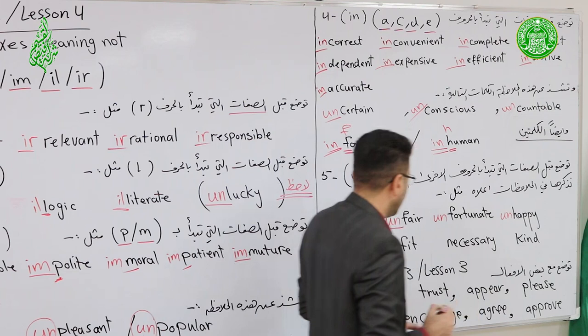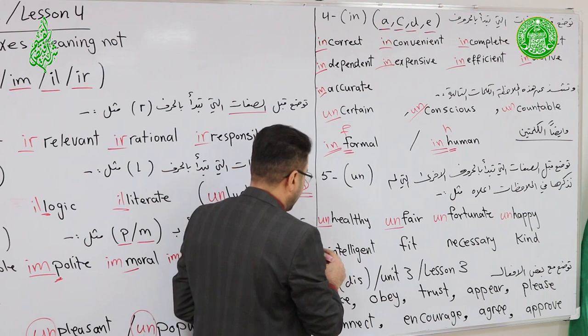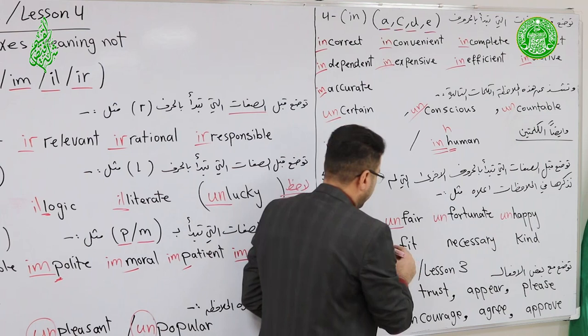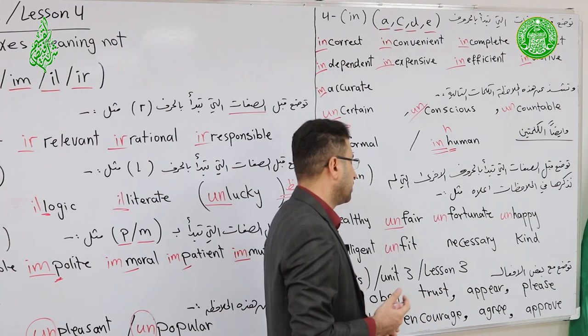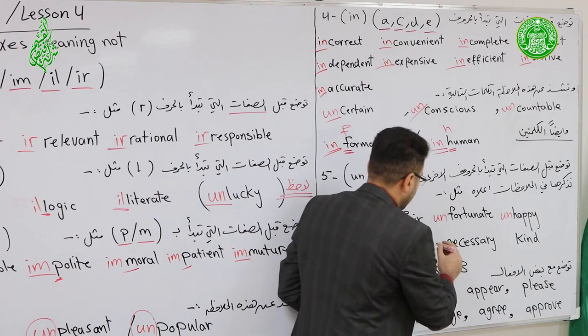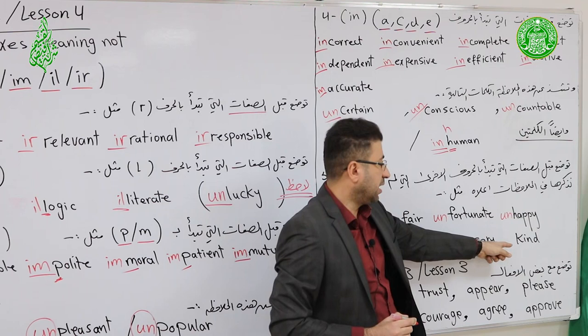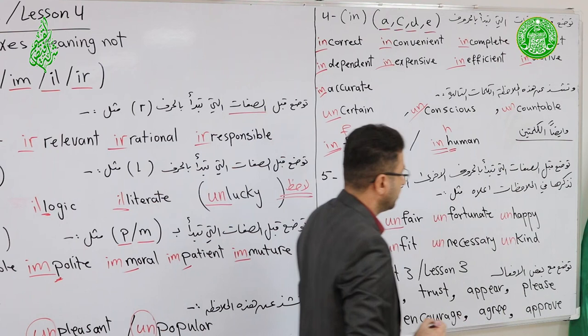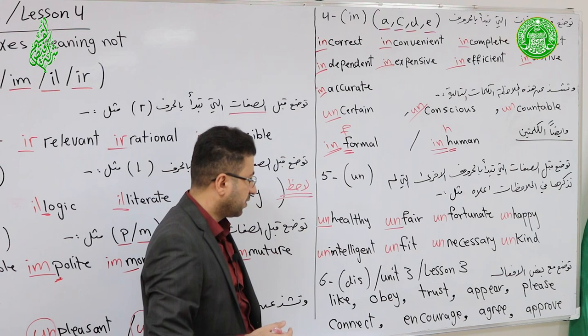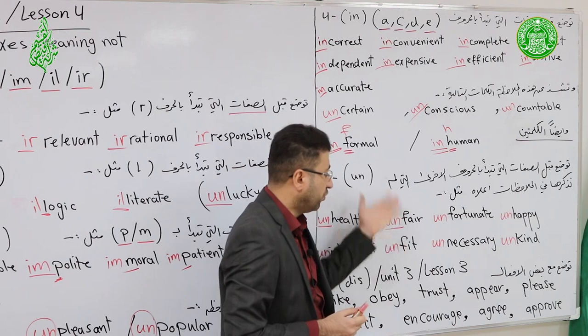Happy → Unhappy (غير سعيد). Intelligent → Unintelligent. Fit → Unfit (غير ملائم). Necessary → Unnecessary. Kind → Unkind (غير لطيف). These all start with letters not covered in the previous notes, so we use the prefix UN.